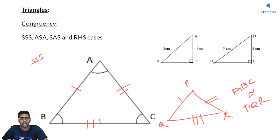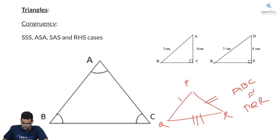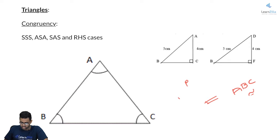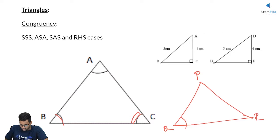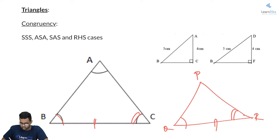Now let us talk about the ASA rule — angle, side, and angle. In the ASA rule, you are talking about two angles and a side. You have two triangles ABC and PQR. This angle is equal to this angle, this angle is equal to this angle, and this side is equal — two angles and the included side. If they are equal, you can clearly say that triangle ABC is congruent to triangle PQR; both triangles are one and the same.